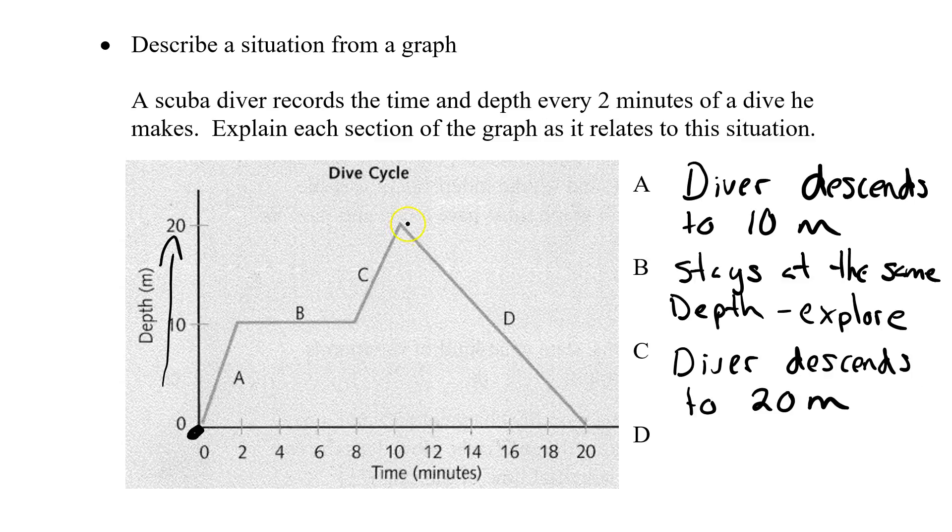Finally, what's happening in D? He makes an immediate turn. So he descends to 20 meters. Maybe he gets scared. Maybe his oxygen is running low. We don't know. But he doesn't stop at all. He doesn't explore at 20 meters. He gets down there and immediately goes back up all the way to the surface. So the diver returns to the surface.